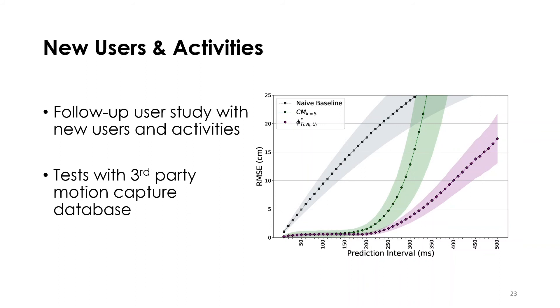We also tested our model with a third-party motion capture database, which included dancing movements. Here also, our model outperformed the classical models, achieving a 3.86 centimeter root mean square error for 300 milliseconds prediction.